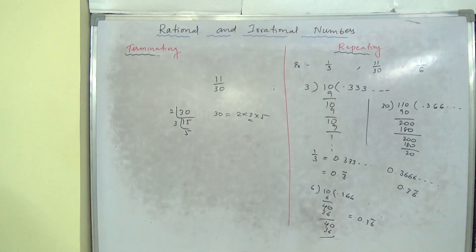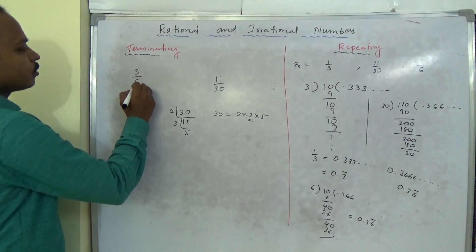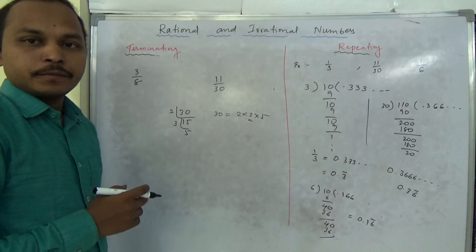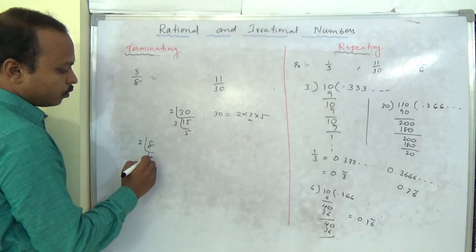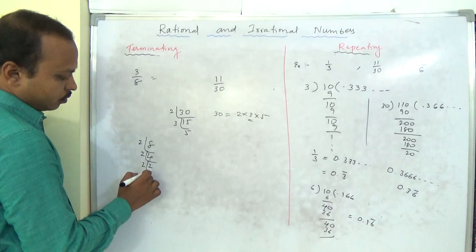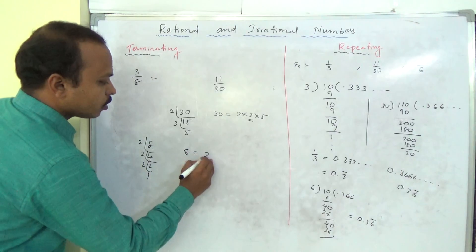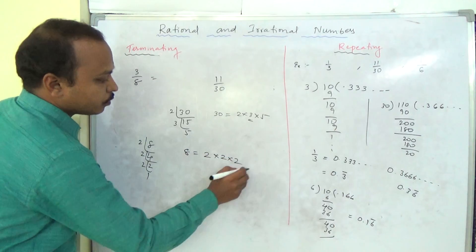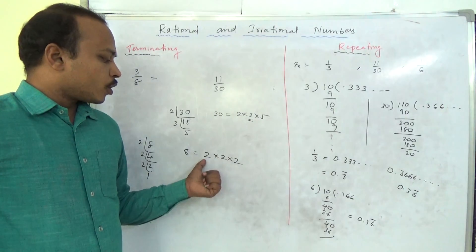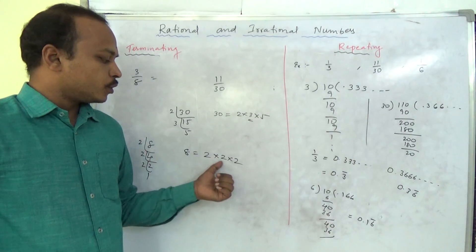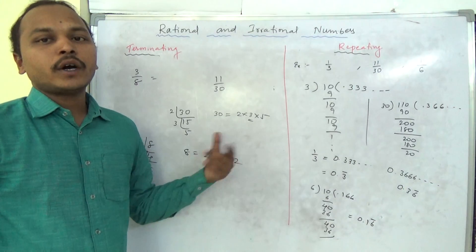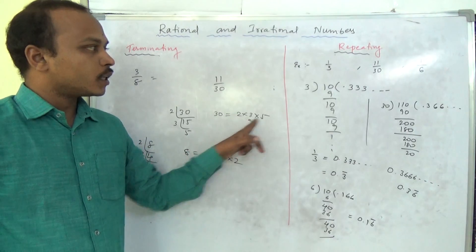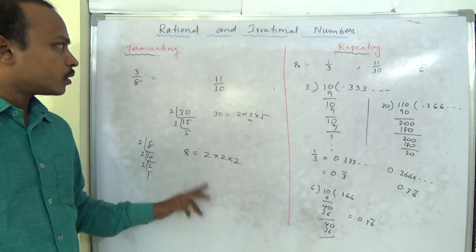Going back to the previous example of 3 by 8: the denominator is 8. We can write 8 as 2 × 2 × 2, which is 2 to the power 3. There is no other number except 2 — no other prime factor apart from 2 or 5. So 3 by 8 is a terminating decimal. If there is no other prime factor besides 2 and 5, it is terminating.